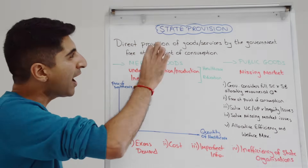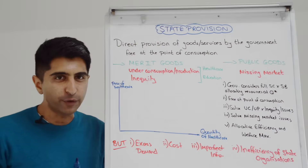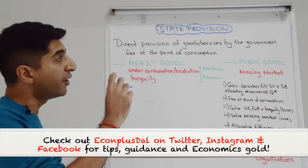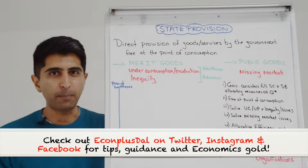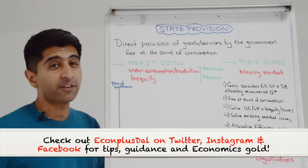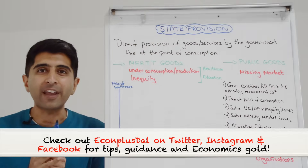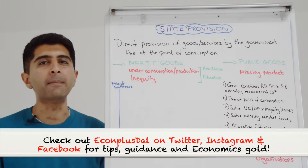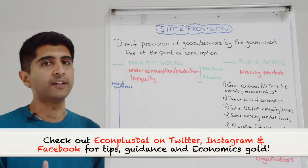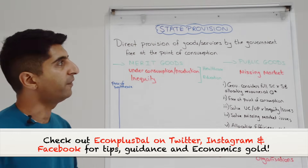State provision is the direct provision of goods and services by the government, free at the point of consumption. You can see from this definition just how extreme state provision is as a policy to solve market failure.